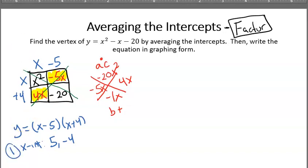Now step 2 is I'm going to average these intercepts because the vertex of any parabola happens to be the x value that is equidistant from these. So that's just the average.